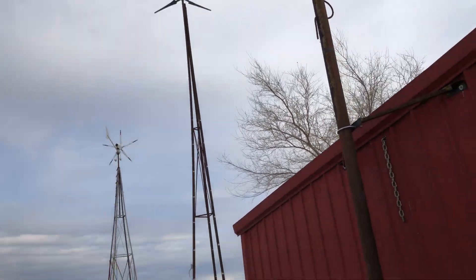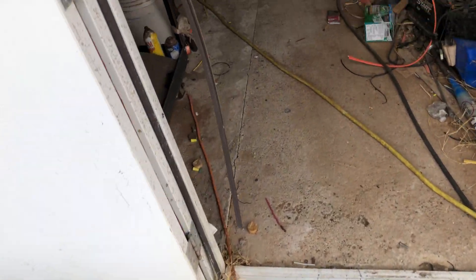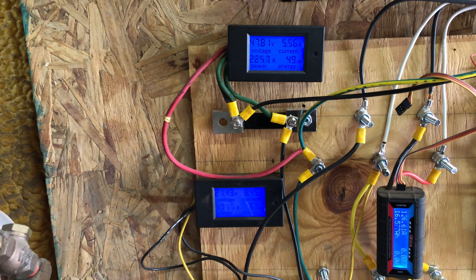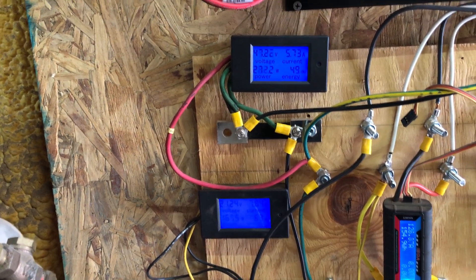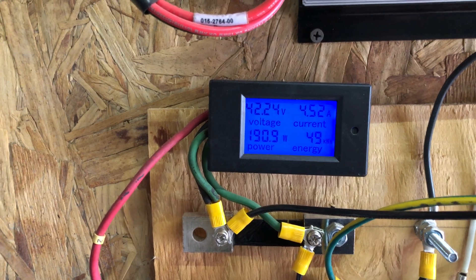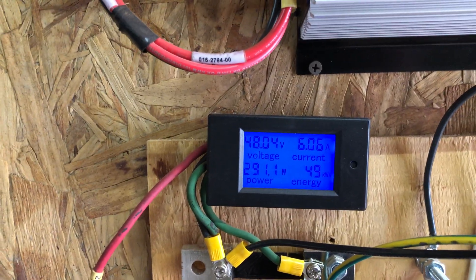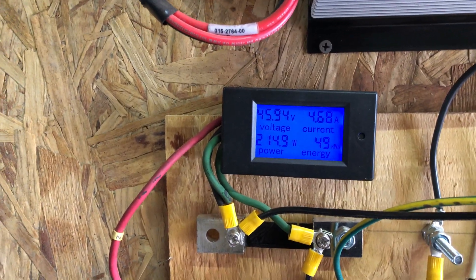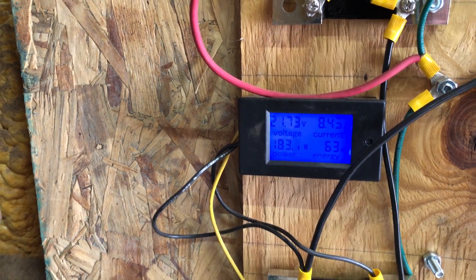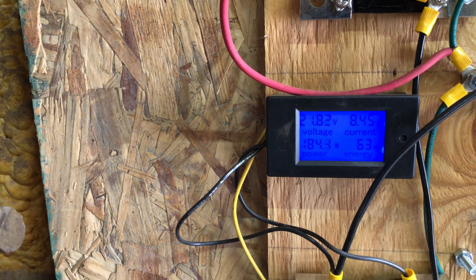Okay, week number six of logging the i-1500 and the Heli 2.0 outputs. I can't remember what we were at last week just off the top of my head. I want to say 37 kilowatt hours for the Heli. The Heli is now sitting at 49 kilowatt hours. The i-1500 is sitting at 63 kilowatt hours.